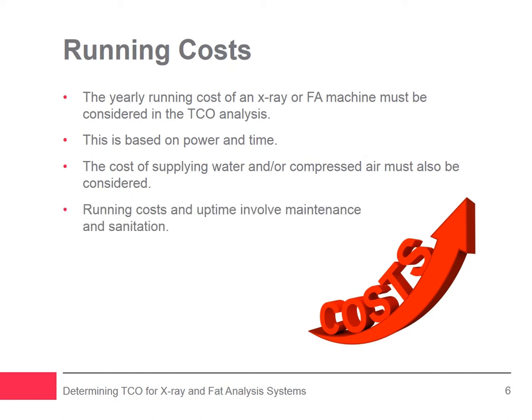Running costs and uptime inherently involve maintenance and sanitation. Meat and poultry processors and other food manufacturers often conduct cleaning regimens multiple times a day. An installation with frequent washdown, caustic cleaning solutions, and arduous cleaning techniques can lead to more downtime and a greater impact on the machine, along with an increased need for maintenance. X-ray and FA machines are available which are designed for easy breakdown for sanitation by one person, alleviating downtime.